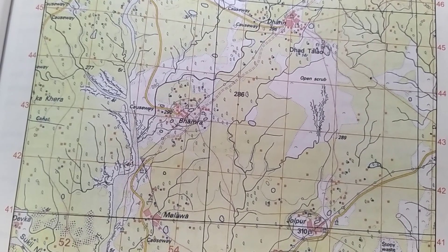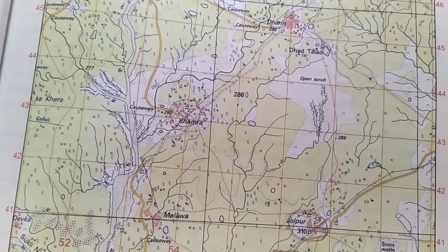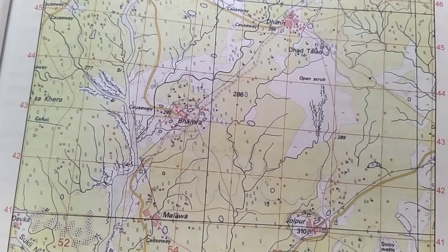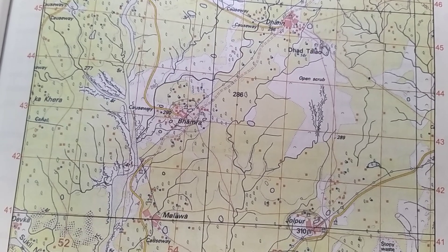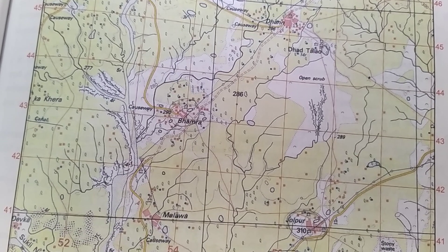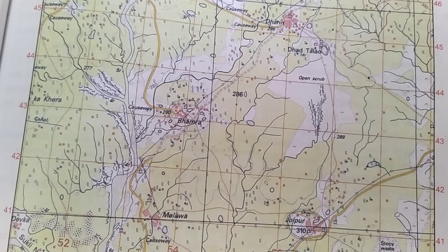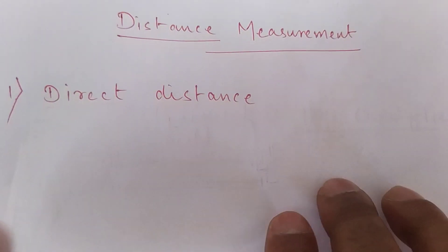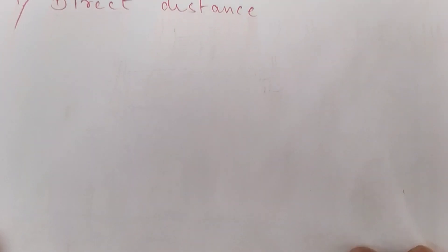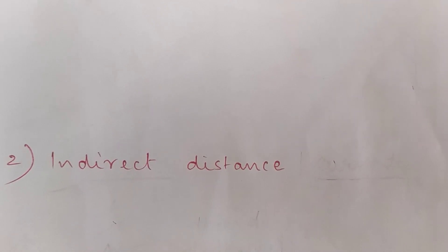Hello children, yesterday I sent you some notes on topographical maps. Today we are going to discuss and learn about distance measurement. The distance on the map is measured in two ways: the first one is direct distance, and the second one is indirect distance.